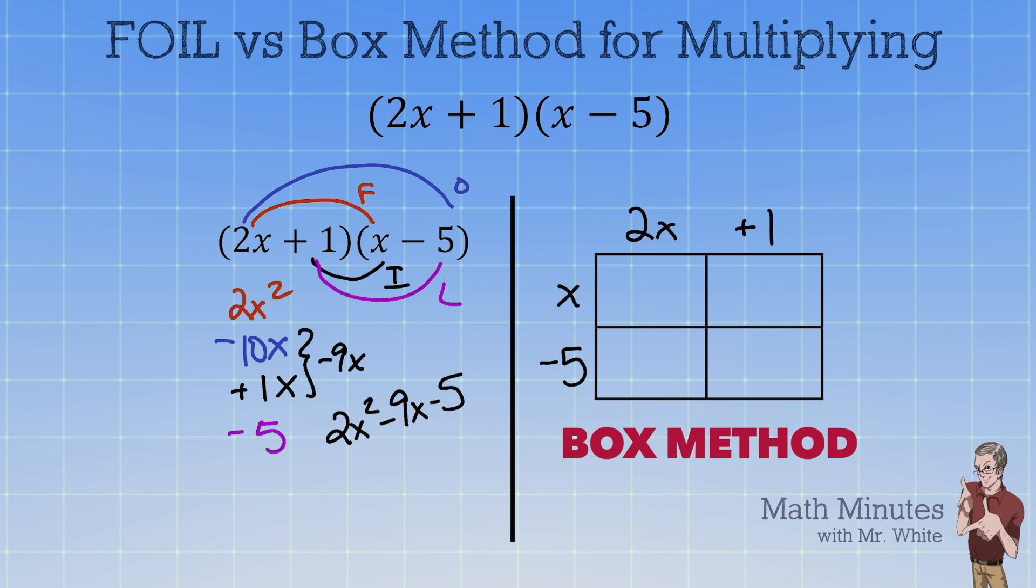Well that is the FOIL from the left side of your screen. So we take the 2x times the x and we write it on the inside of that box. So this would be the 2x². Moving down to the next box we're going to take 2x times -5 we get -10x. Note that that was the O on the left side of your screen.